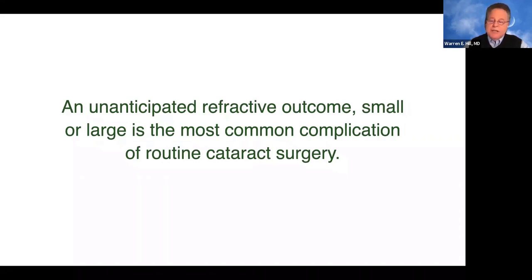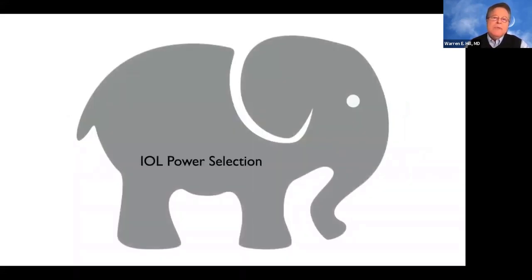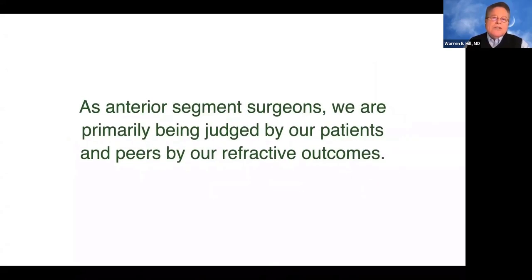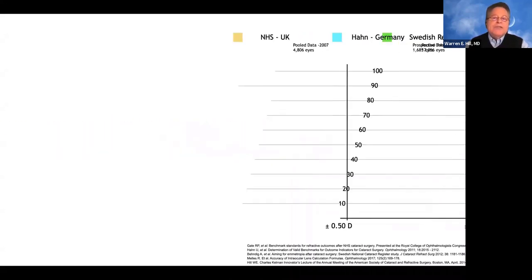Fortunately, most of the time this doesn't result in a lens exchange, but it's the one place where we probably have the least confidence with current technology. Said another way, it's pretty much the elephant in the room — and that elephant every time we go into the operating room is IOL power selection. As anterior segment surgeons, we are primarily being judged by our patients and our peers by our refractive outcomes. So what are the accuracy standards, and should what's most common be good enough? I'm here to tell you it shouldn't be.